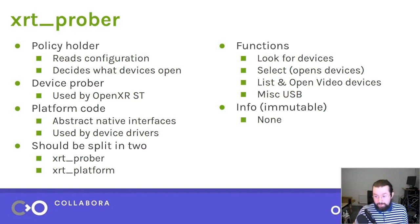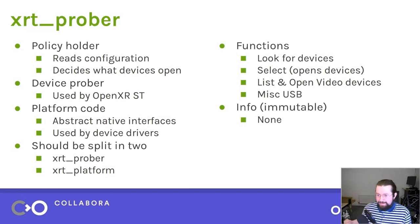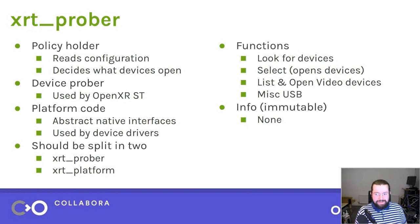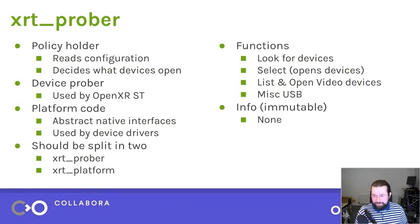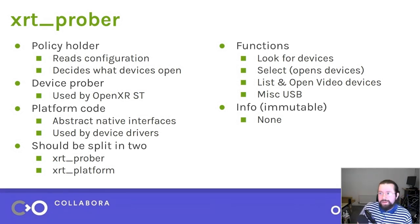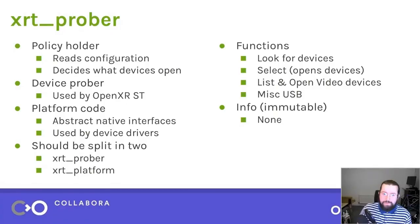Then we have the prober, which is the thing that has become where we dump all of the functionality that doesn't really fit into any of the other buckets. It holds the policy, probes the devices that are on the system, and abstracts away some of the OS things on how to talk to hardware. We probably should split it into two parts — we've been thinking about that for a while.